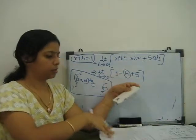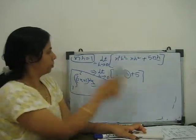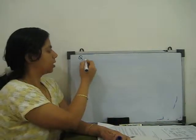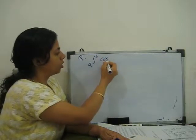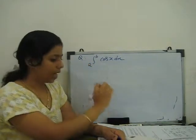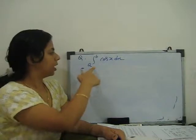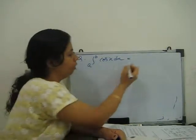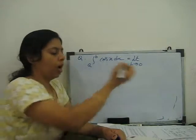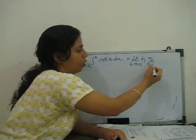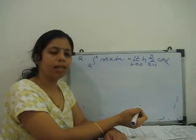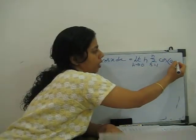Next, evaluate the integral from a to b of cos(x) dx as the limit of sum. We have to find nh, where nh equals b minus a, same as before. Our function is: limit as h tends to 0, h times summation from r = 1 to n of cos(a + rh).